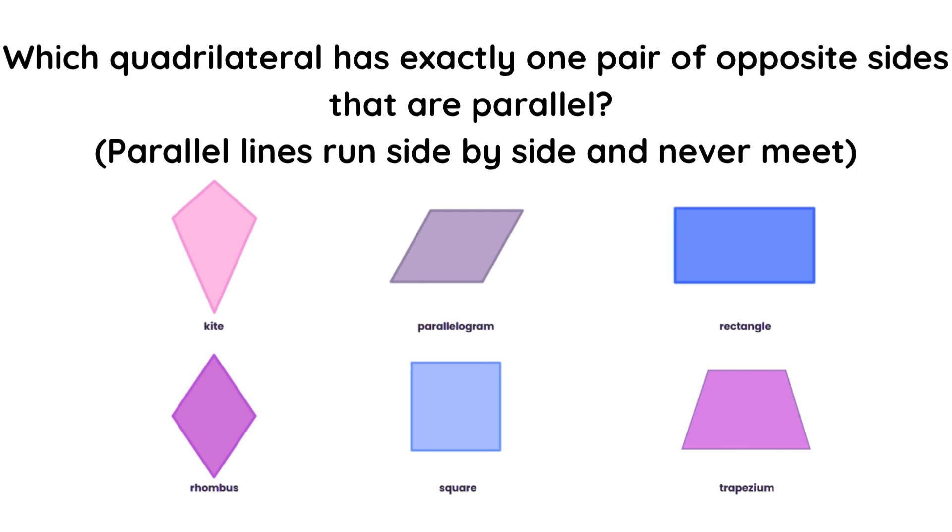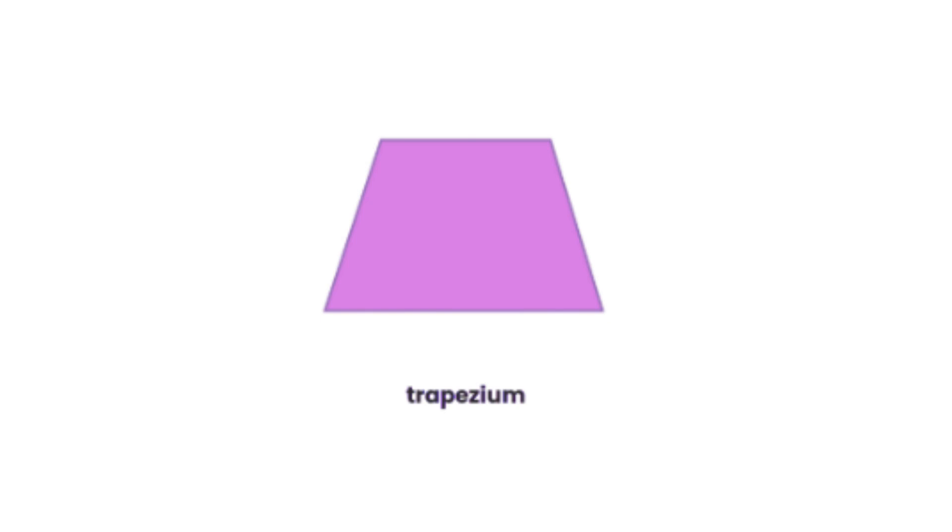Which quadrilateral has exactly one pair of opposite sides that are parallel? Parallel lines run side by side and never meet. The answer is trapezium.